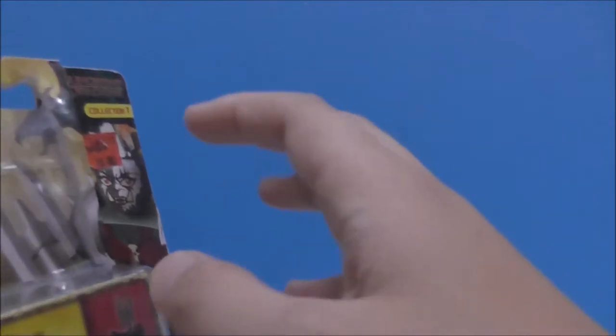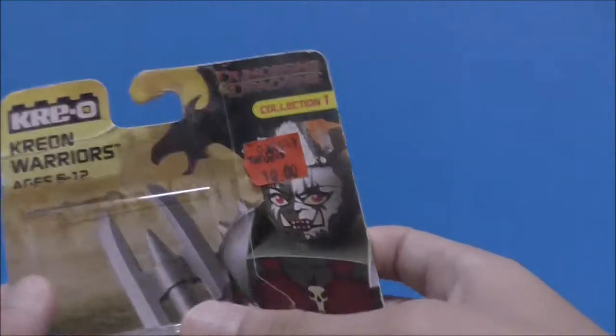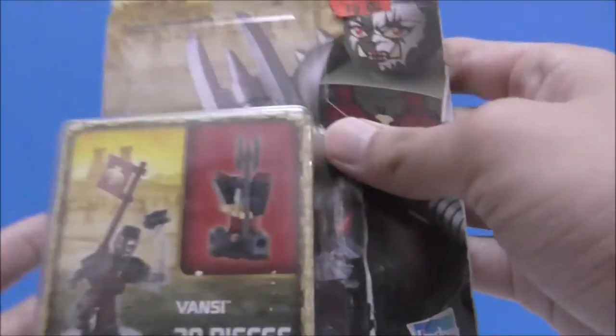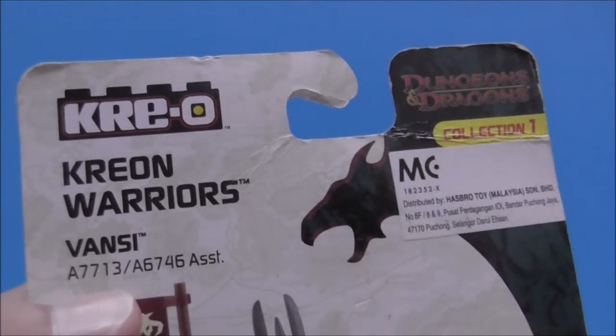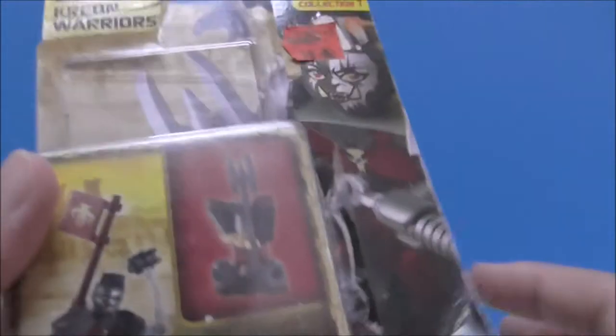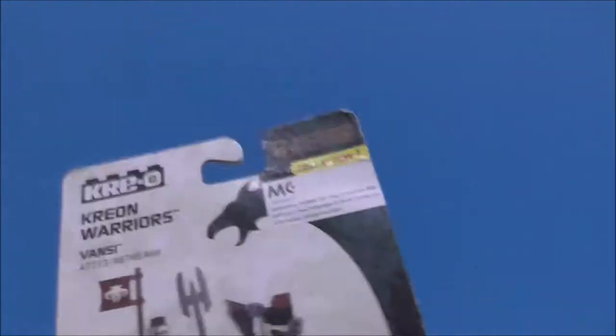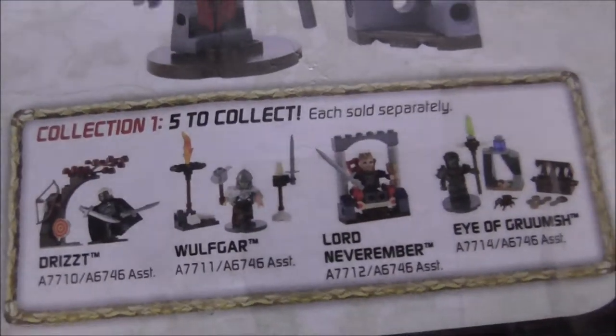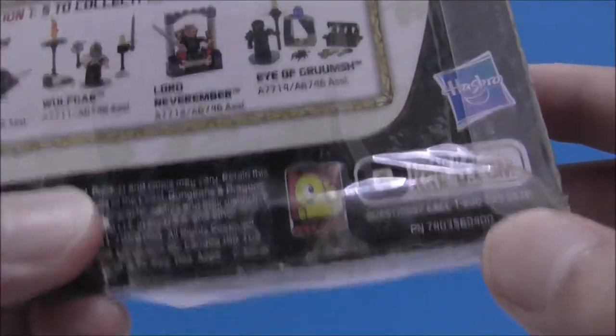You can see it's recommended for ages 6-12. This set is A7713. It comes with 30 pieces and it's the first wave. On the back you can see it shows all the stuff that comes with and all the other Kreon Warriors.